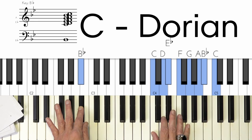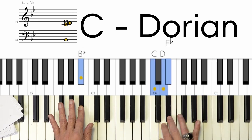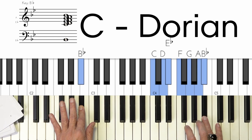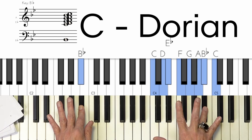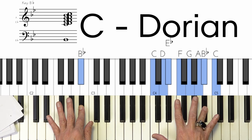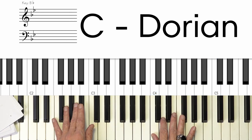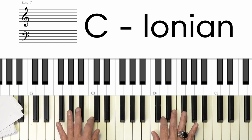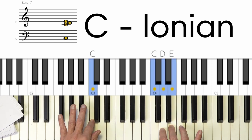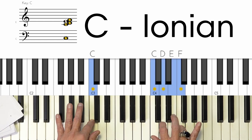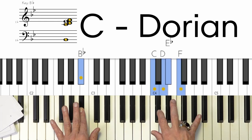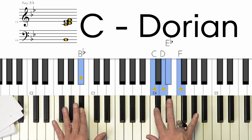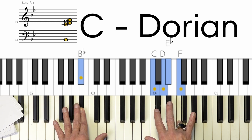Let's listen to that again. I'm flatting E flat and B flat, and you'll notice a particular uniqueness to this sound compared to the Ionian. Here's Ionian, then here's C Dorian. Notice the quality difference from major to minor in the sound of C Dorian — very powerful.